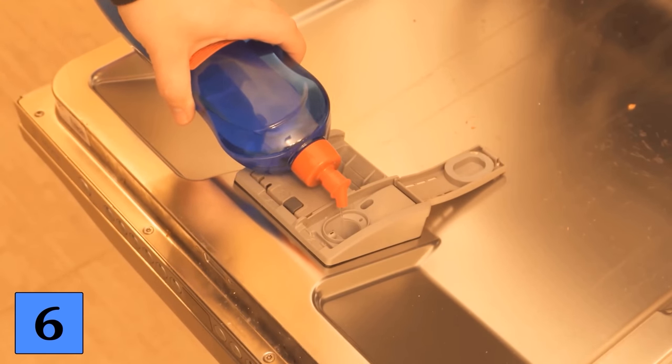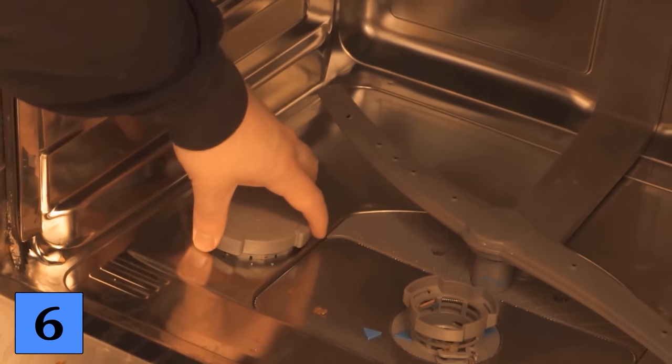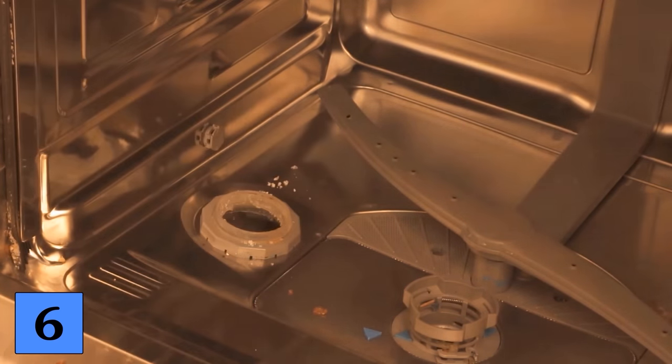Of course, the same applies to dishwasher salt. You'll usually find a small opening like this at the bottom of the machine that you can unscrew. And here you can add dishwasher salt until it is completely full again. Because if it's empty, the dishwasher may not produce the perfect result you want.